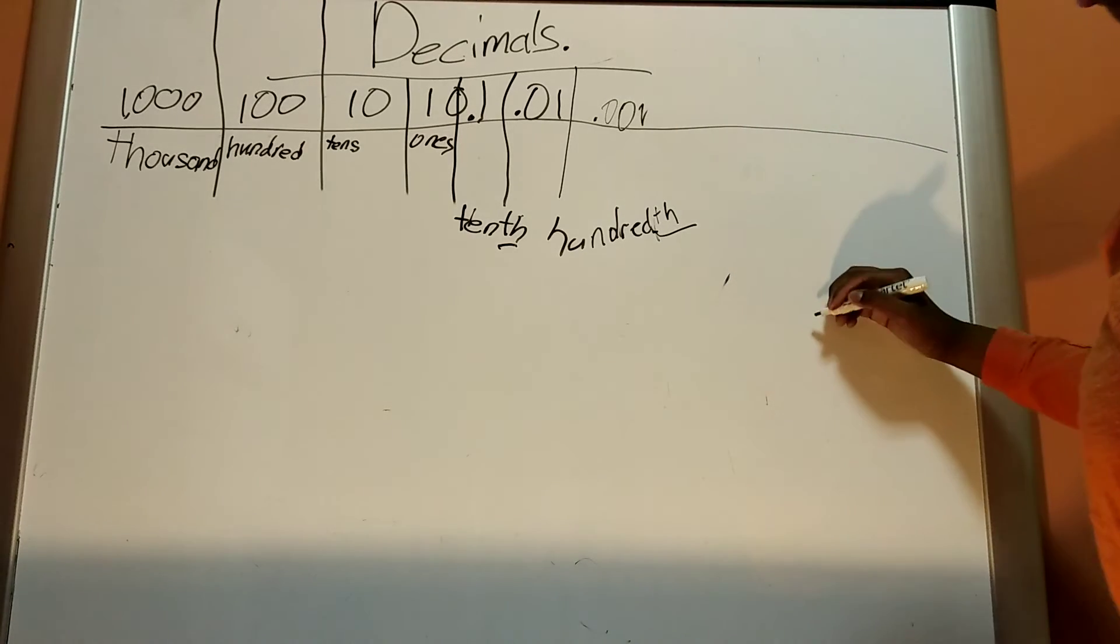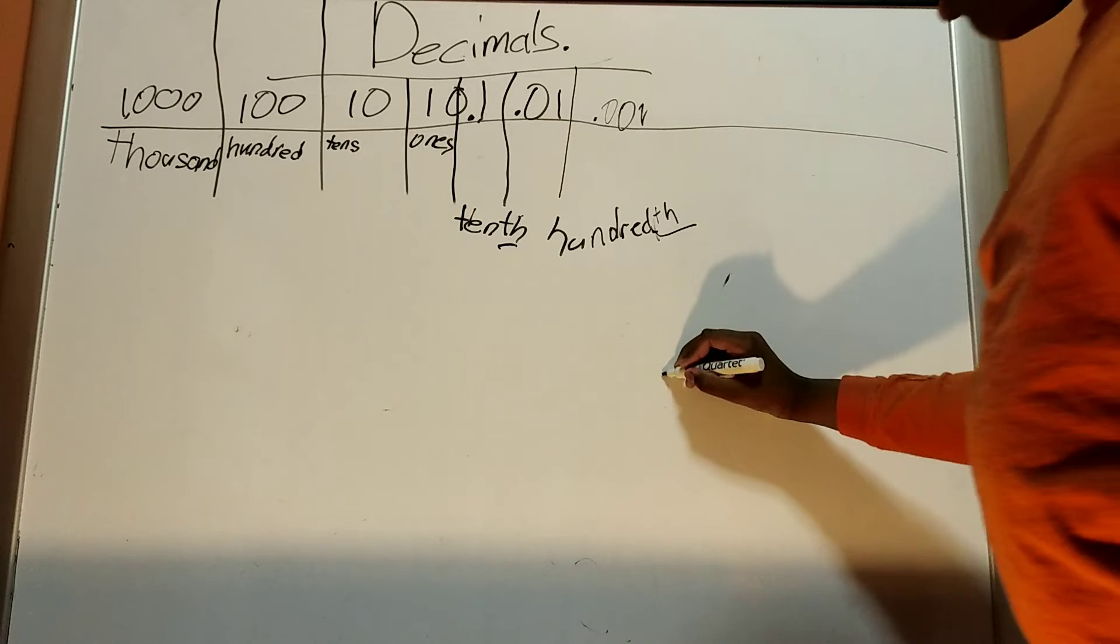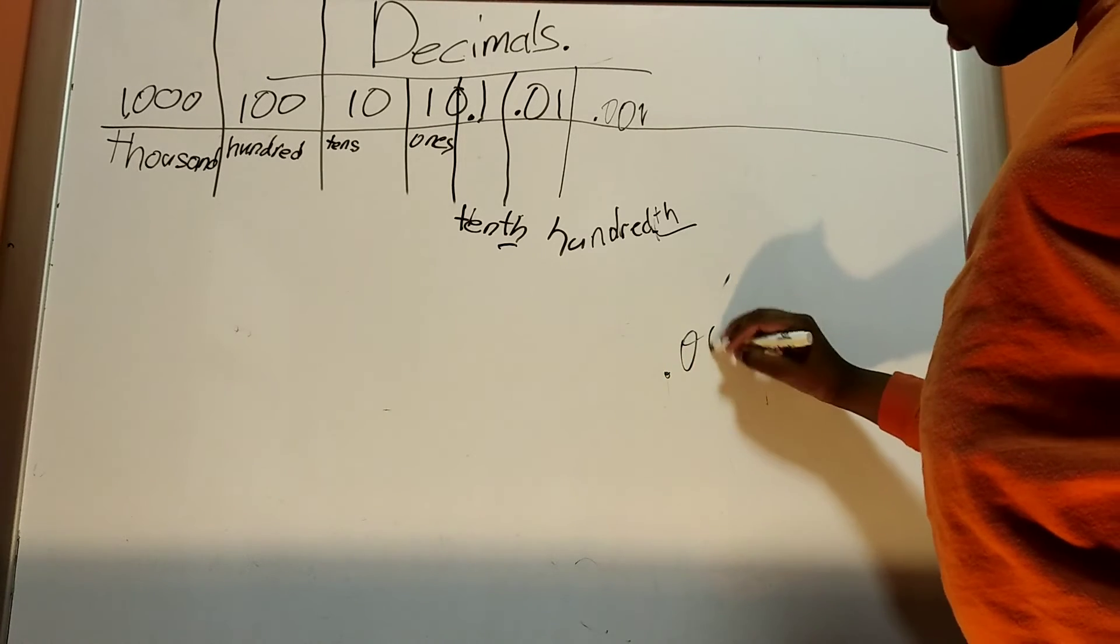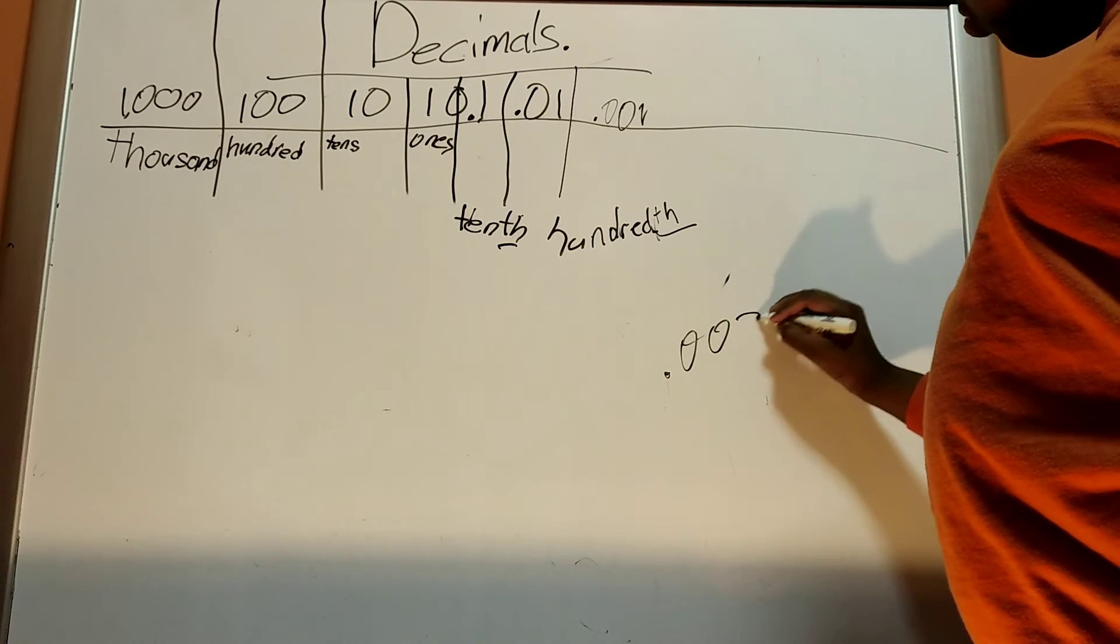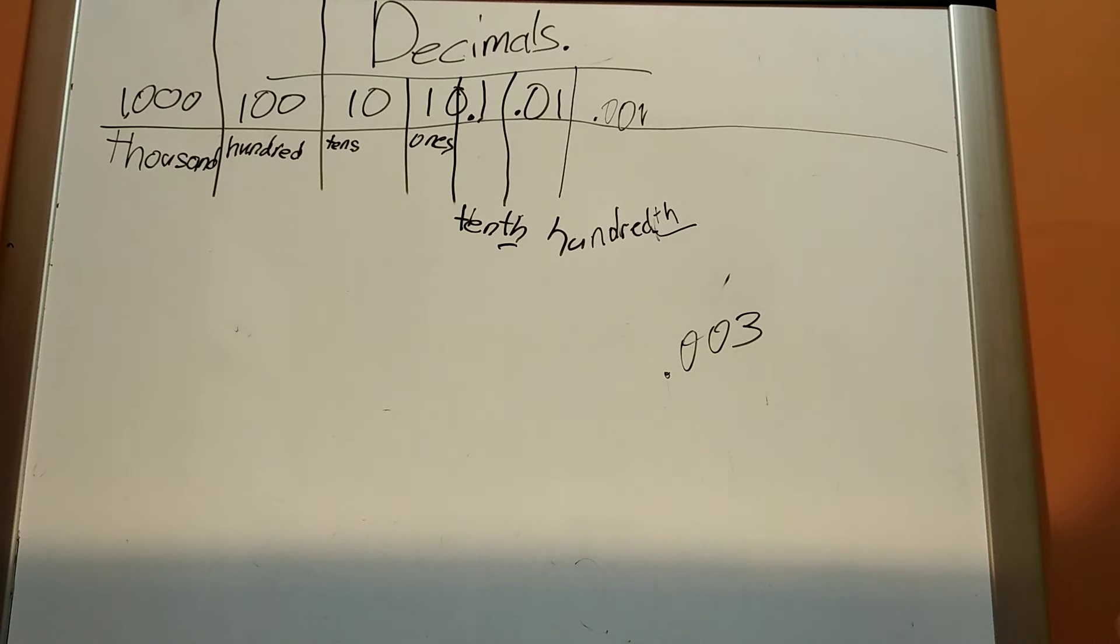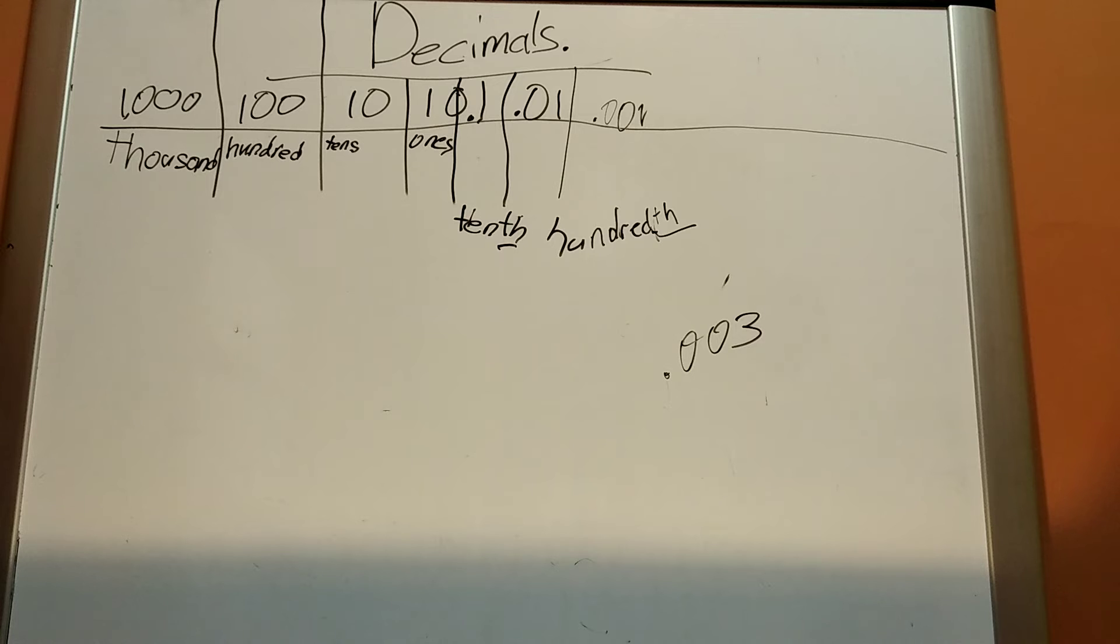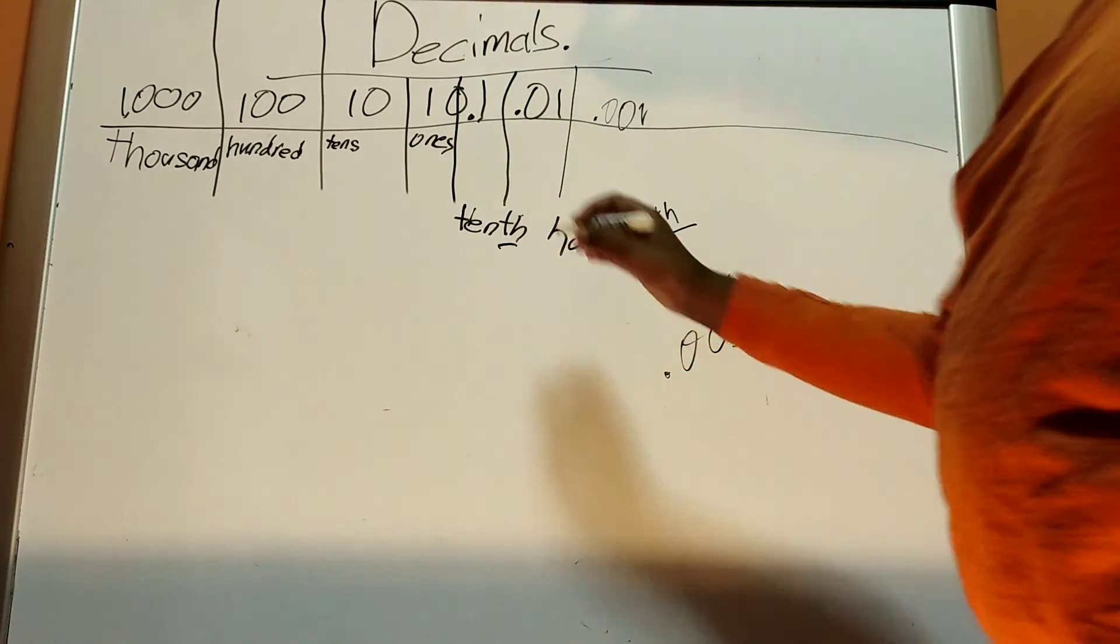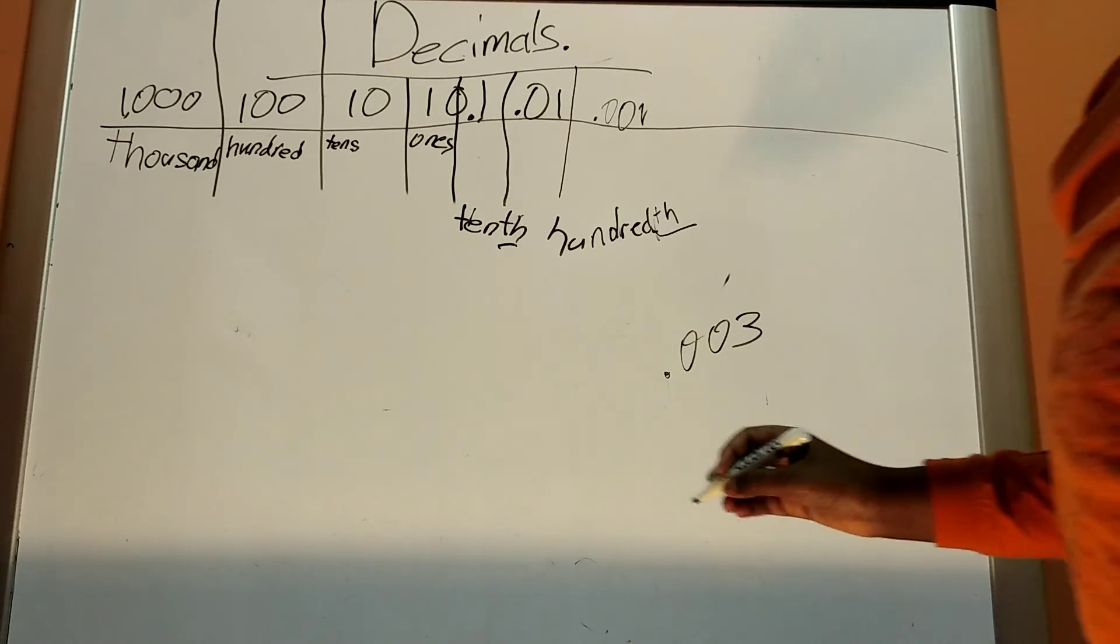Decimals can be 0.003. They can be any numbers, really. It's not really going to the negative side of numbers. It's more of just switching sides and going to parts of a number.